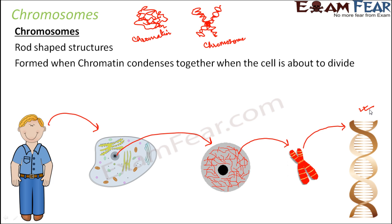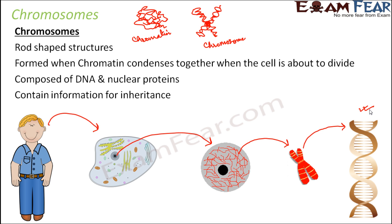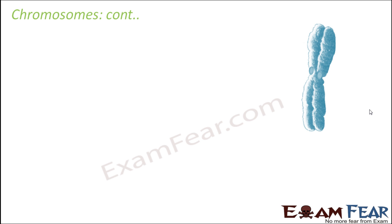The nucleus is therefore the control center of the cell. Chromosomes are composed of DNA and nuclear proteins, and they contain information for inheritance.